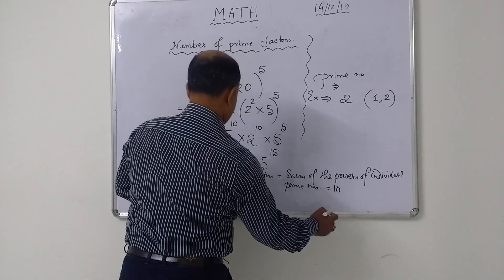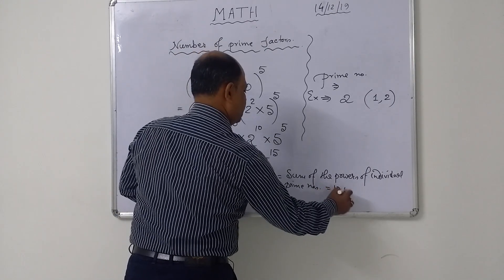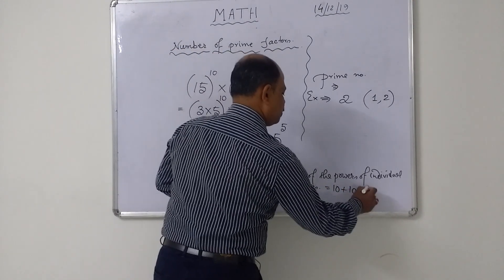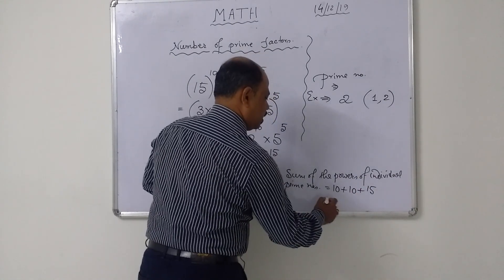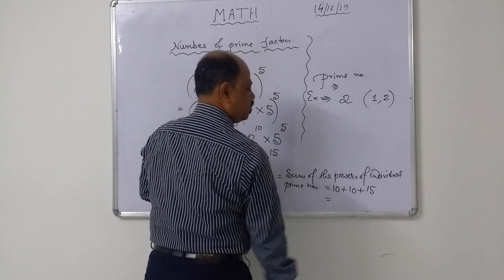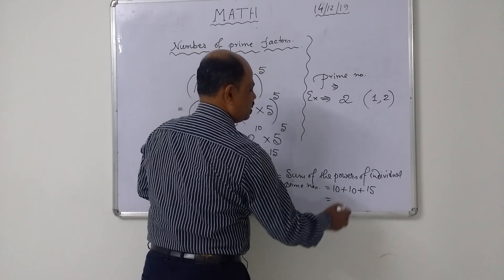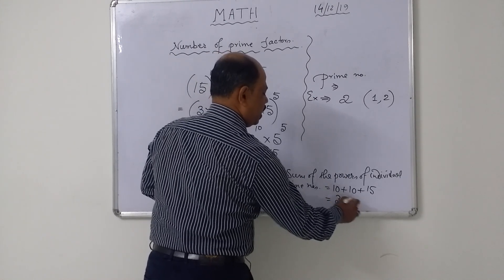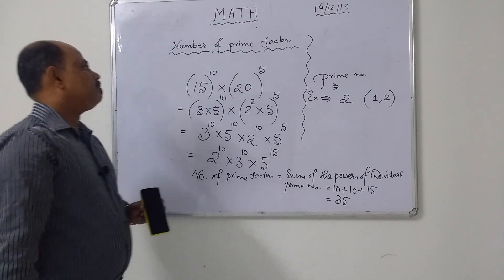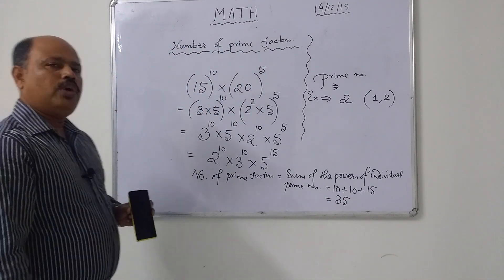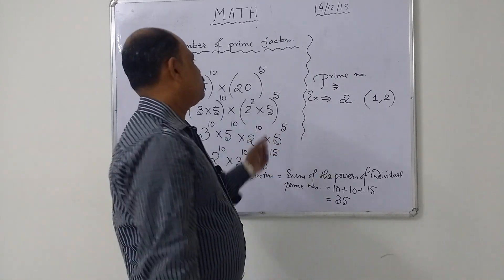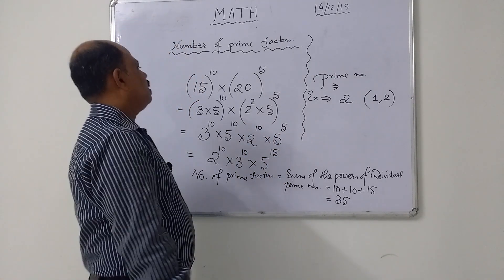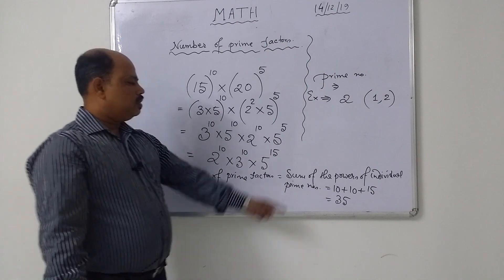So 10 plus 10 plus 15 — that is equal to 20 plus 15, which is 35. Therefore, the number of prime factors of that expression is 35.